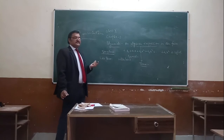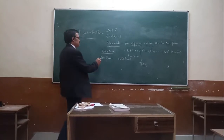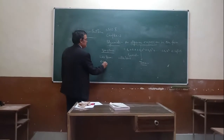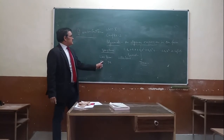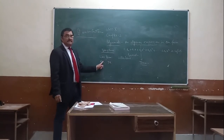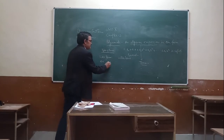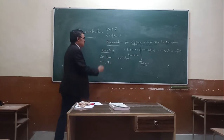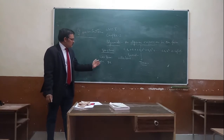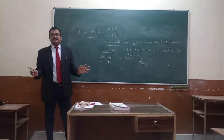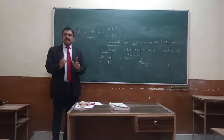Like terms are those terms which have same variables and same powers. For example, 4x and 7x have the same variable and the same power — variable is x, power is 1 in both. Same variables and same powers, but the numerical coefficients may be different.